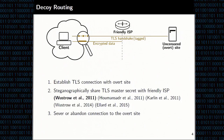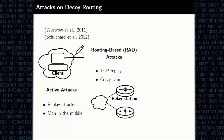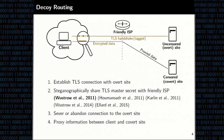After this, the censor sees just encrypted data that looks like it's heading to the overt site. But the friendly ISP is actually shuffling information back and forth between the client and the censored covert site. From the censor's point of view, they see a perfectly legitimate TLS handshake and then encrypted data going back and forth, which they assume is to the overt site.